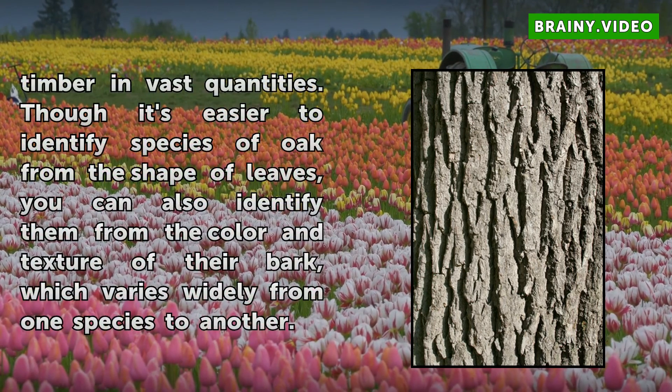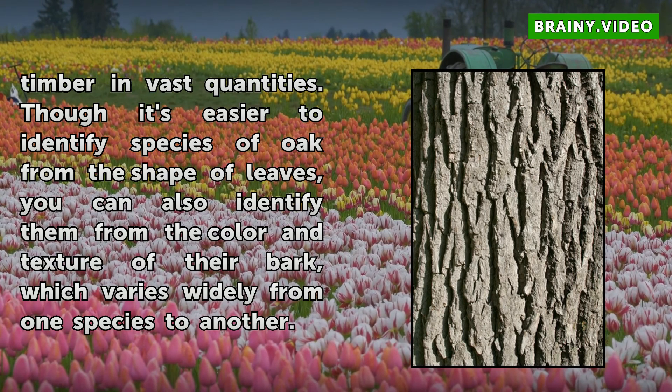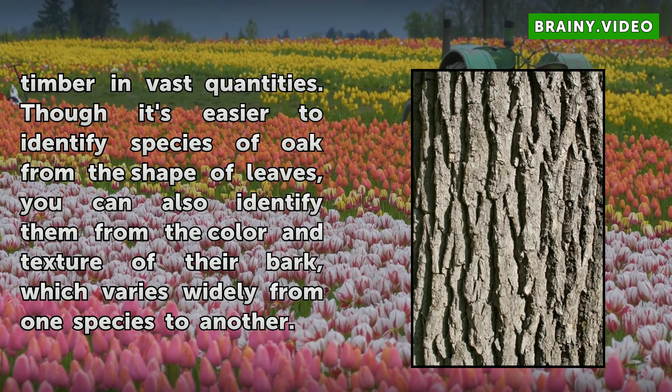Though it's easier to identify species of oak from the shape of leaves, you can also identify them from the color and texture of their bark, which varies widely from one species to another.